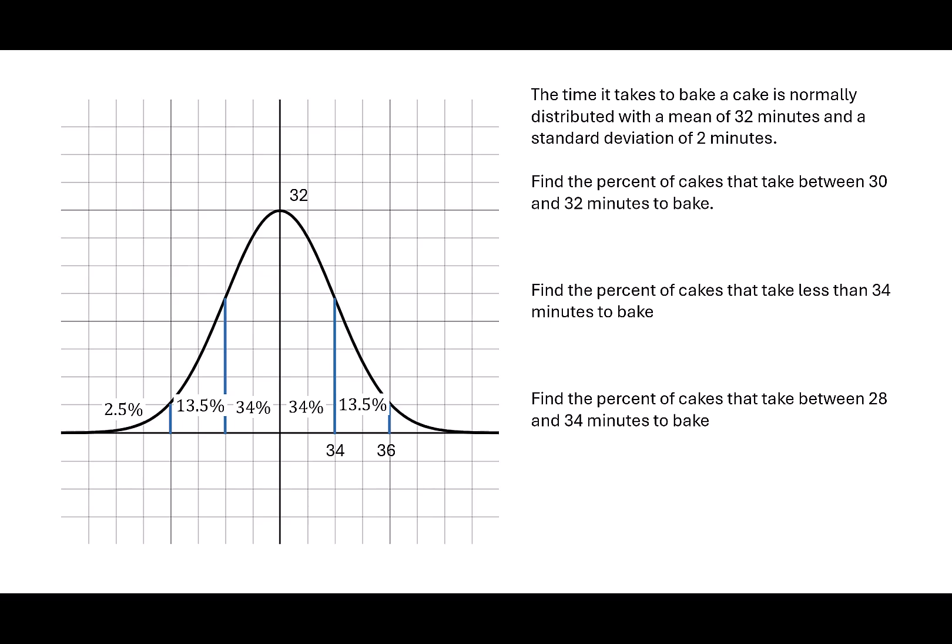Let's repeat that on the left. 32 minus 2 gives me 30. Then I subtract another 2, which gives me 28. Now we're ready to answer some questions.